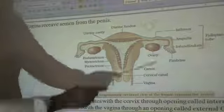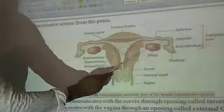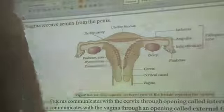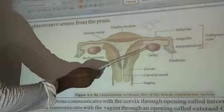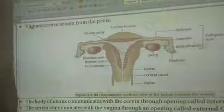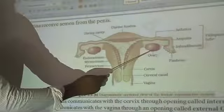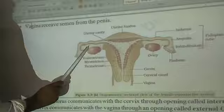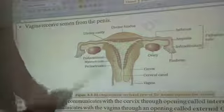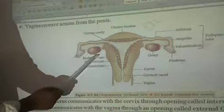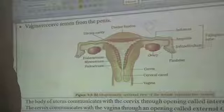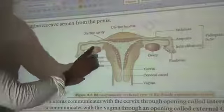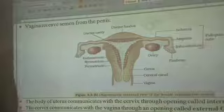First, one by one, we have to see each part. First, we will see about the ovary. The ovary is attached on the wall of the uterus by ligaments. Each ovary is surrounded by the germinal epithelium.